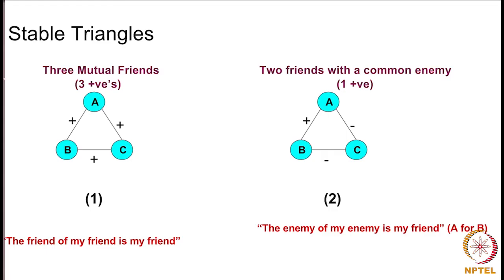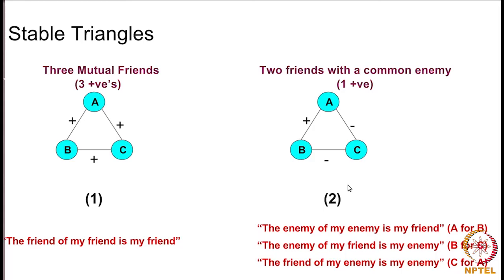This triangle with one positive edge and two negative edges is also stable and follows several interesting social beliefs. Node A follows 'the enemy of my enemy is my friend,' B with respect to C follows 'the enemy of my friend is my enemy,' and node C with respect to A follows 'the friend of my enemy is my enemy.' All nodes are satisfied with their relationships. So triangles with either one or three positive edges are stable.